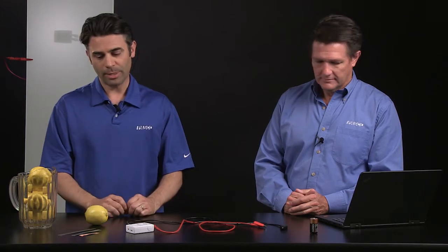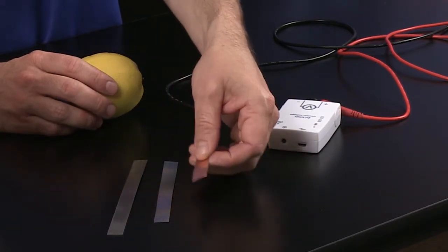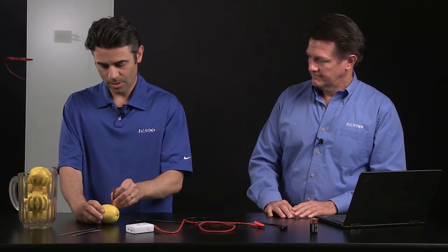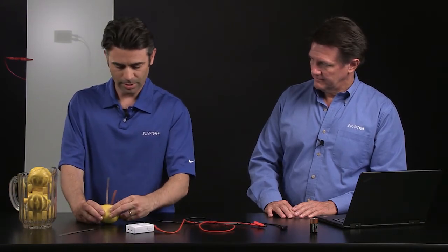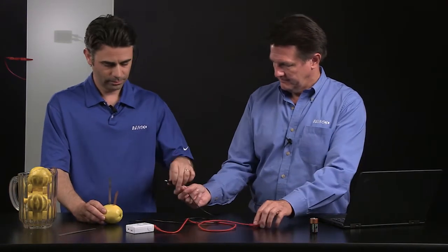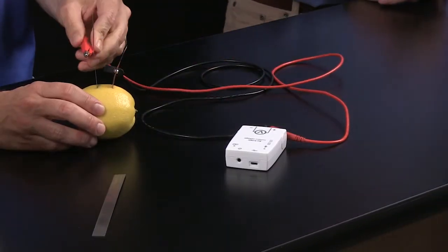So now we can try to make a lemon battery. So all you need is a lemon and some combinations of different metals. In this case, I have some copper, zinc, and iron. I'm going to test my copper with my zinc first, and we'll attach those leads to this.